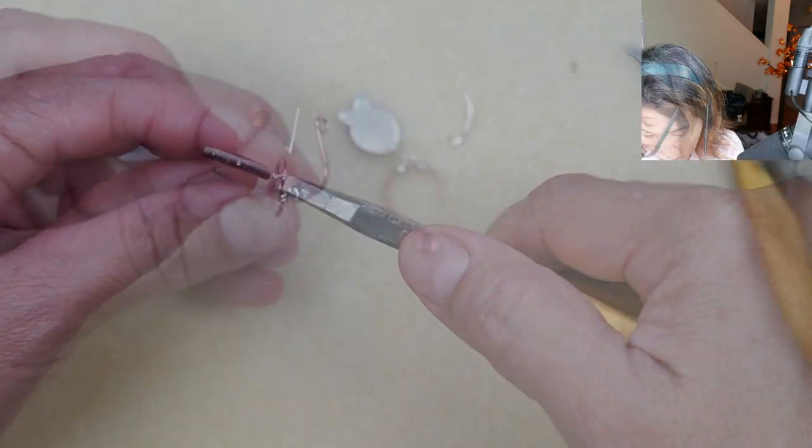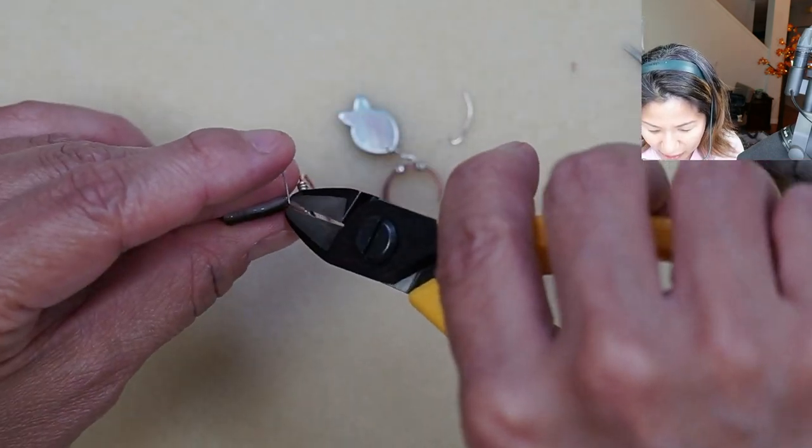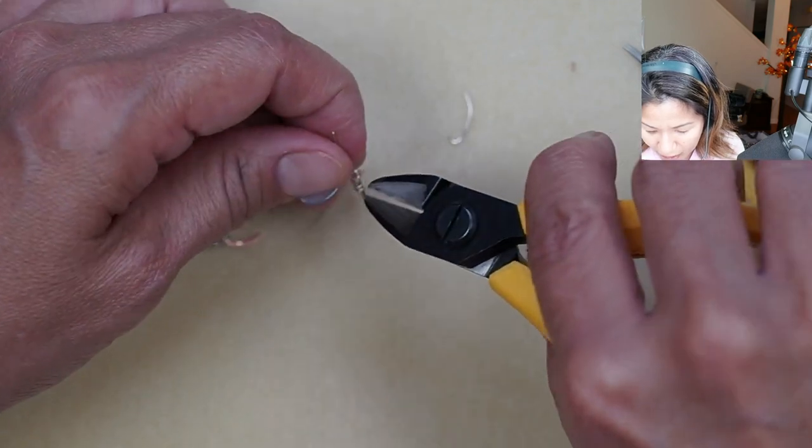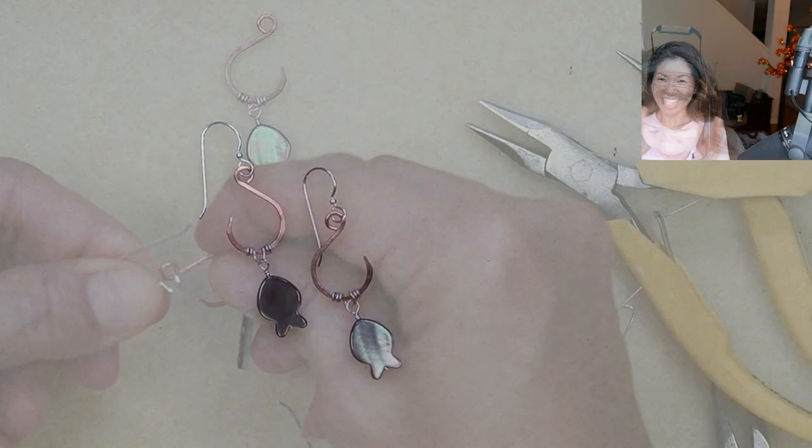Trim off the wire at the end. Cover it with your fingers so it doesn't fly please and attach it to the ear wires.